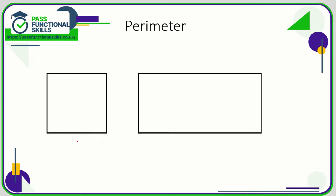First of all, let's look at a square. In a maths question, generally when they're talking about squares, they will only give you one side length. The reason for that is because in a square all side lengths are exactly the same, so they don't need to give you every side. If one side is eight, then all sides are eight, so the perimeter is going to be eight plus eight plus eight plus eight, or eight times four, which is 32 centimeters.